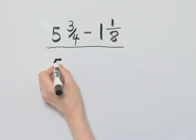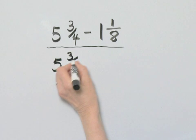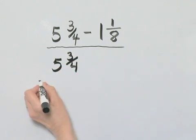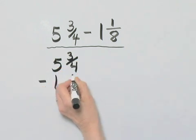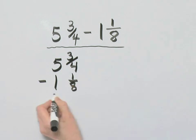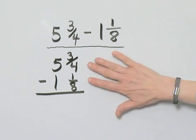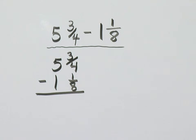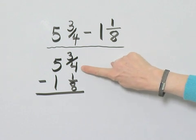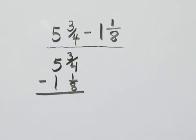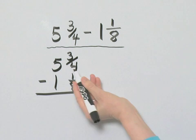So that's 5 and 3 fourths minus 1 and 1 eighth. Now remember when adding or subtracting, especially fractions or mixed numbers, we need a common denominator. Here a denominator of 4, here a denominator of 8, so we have the least common denominator of 8.